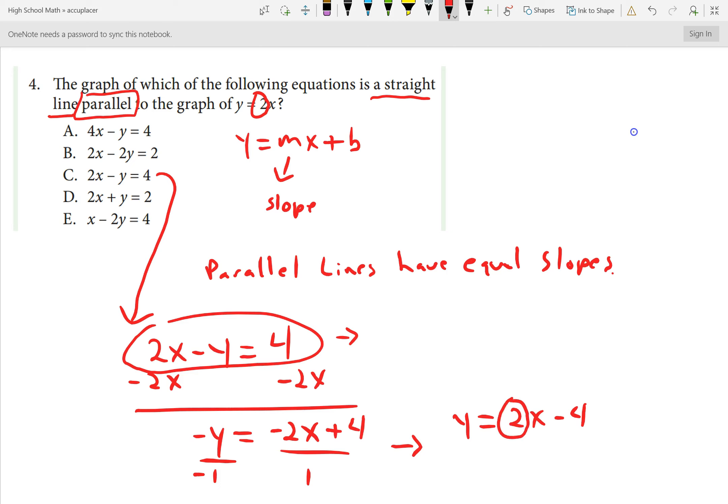When you're in standard form here, the slope will equal negative a divided by b in the form ax plus by equals c. In our case, a is 2, b is minus 1. Well, 2 divided by minus 1 would be negative 2, and negative of that is positive 2. So the slope of line c is 2, the slope of our original one is 2. The correct answer is c.